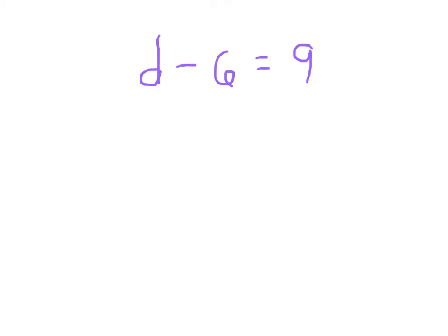Here's another problem. You'll notice this time I'm subtracting a number. Subtracting 6 from some number. So it's D minus 6 equaling 9. And I'm trying to solve for the variable.